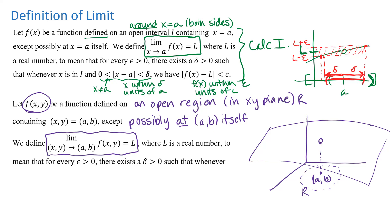We define this limit to be L where L is a real number — just like in the single-variable version, L is what the outputs are approaching. Drawing some dashed lines to keep things aligned on my 3D picture, it looks like L would be right there, as the function outputs appear to approach that value as (x, y) gets close to (a, b). So L is a real number to mean that for every epsilon there exists a delta such that whenever... we now want to think about what that next condition looks like extended to multivariable functions.